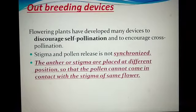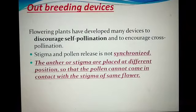This leads to cross-pollination in a bisexual flower because both are not able to mature simultaneously. So the first outbreeding device developed by the plant is that stigma and pollen release are not synchronized — stigma and pollen do not mature at the same time.